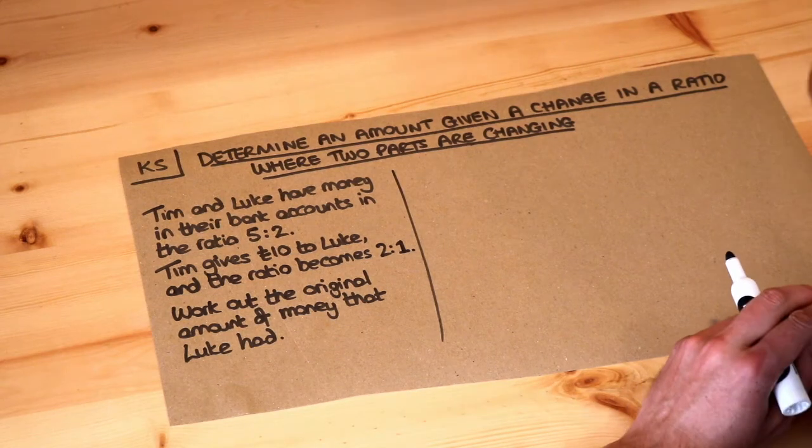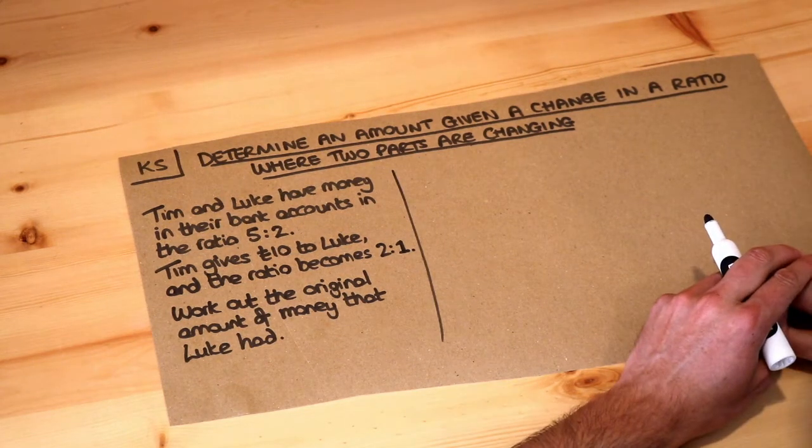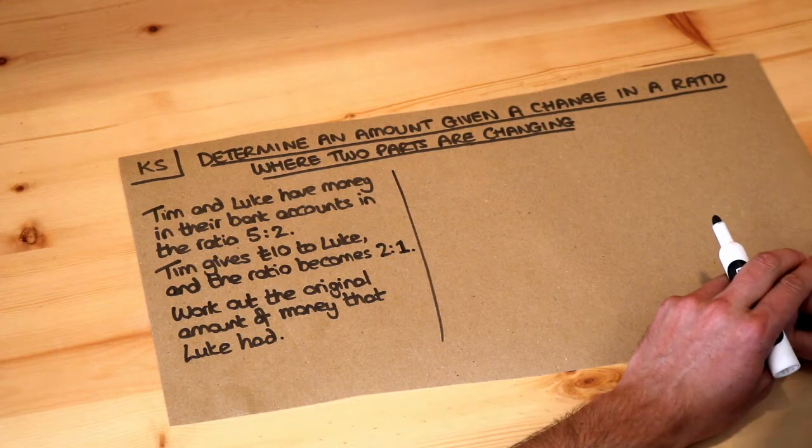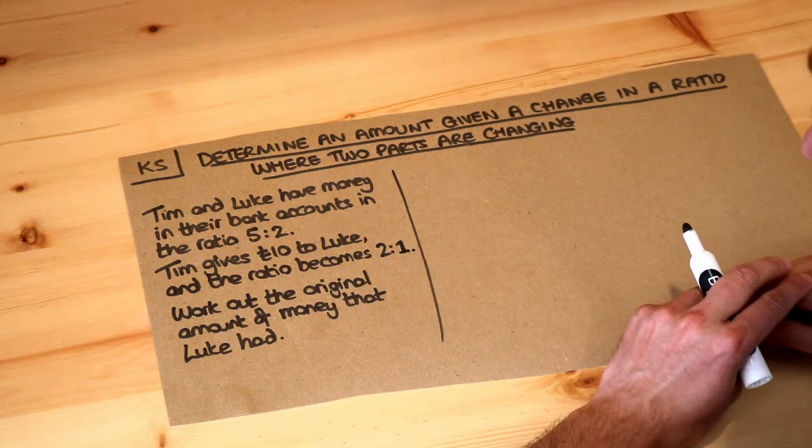Hello and welcome to this Dr Ross Mass key skill video on determining an amount given a change in a ratio where two parts are changing. Let's read the problem.